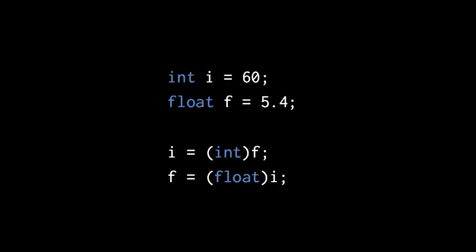So consider this example, where we've declared an int variable named i, and assigned it the initial value 60, and we've declared a float variable named f, and assigned it the initial value 5.4. Well, if we want to assign the value of f to i, we first have to cast it into an int.